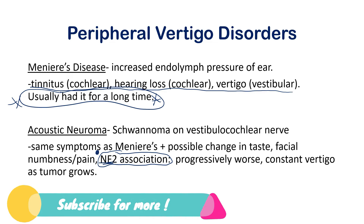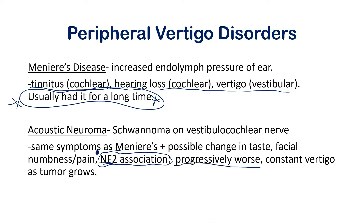What distinguishes acoustic neuroma is that it gets progressively worse. A growing tumor will increasingly impinge on surrounding nerves, so tinnitus, hearing loss, and vertigo — along with any taste changes or facial numbness — all worsen over time. It also causes constant vertigo, whereas Ménière's disease comes and goes, usually over minutes to hours. With acoustic neuroma, it's a constant vertigo that you deal with all the time as the tumor grows.